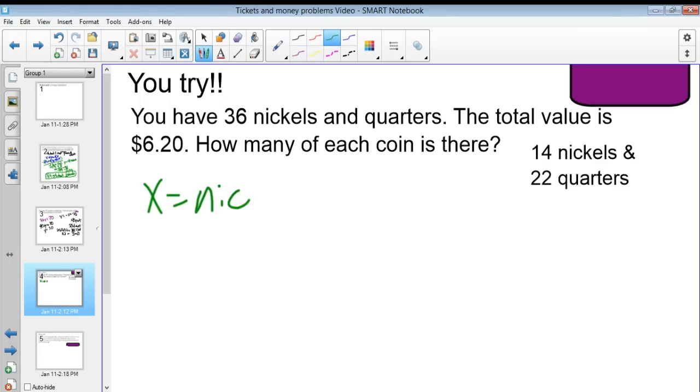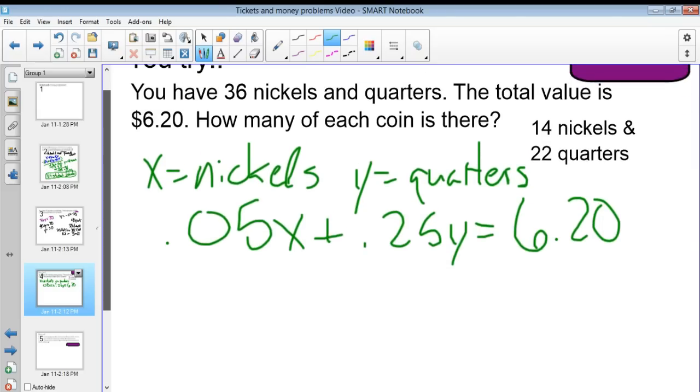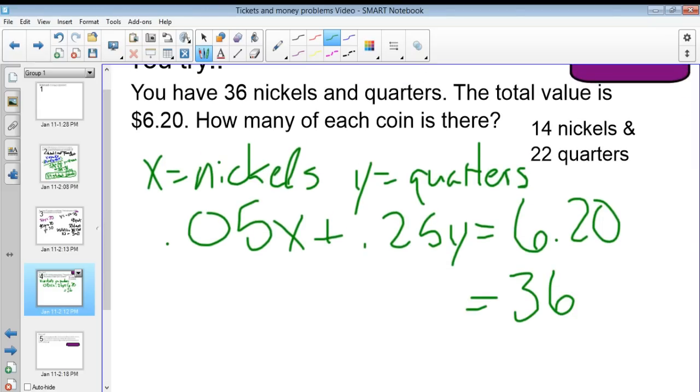X is going to be equal to our nickels. Y will be quarters this time, mixing it up. So that means 0.05X plus 0.25Y is equal to $6.20 because the total value is $6.20. Since our coefficient for X's is nickels, our coefficient is 0.05. Make sure you put 0.05 and not just 0.5. If you did 0.5, that's probably where you went wrong. And then quarters is 0.25. The total amount of coins is 36. So 36 is equal to X plus Y. We can solve it from there.